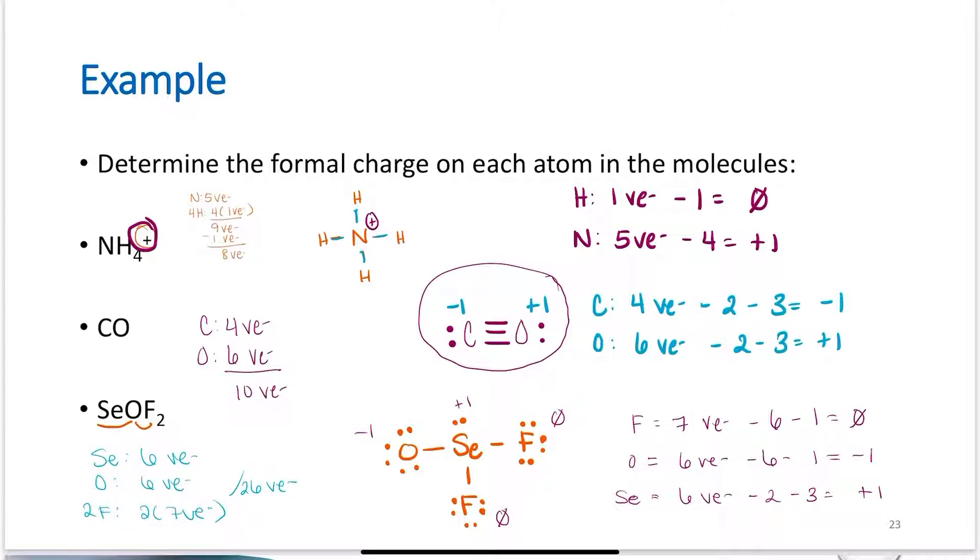But in the case of SeOF2, it is possible to minimize that formal charge. It doesn't want to have a positive charge next to a negative charge if it can avoid it. And so it's not going to. What it's going to do instead is it's going to take one of these lone pairs and make a bond, a double bond here. When it does that, it gets rid of that charge here. Now oxygen: 6 valence electrons, 4 lone pairs, 2 bonds. Overall zero charge. Selenium: 6 valence electrons, 2 lone pairs, 4 bonds. Overall zero charge. So that's what I mean by minimizing formal charge. It will minimize it when it's able to.